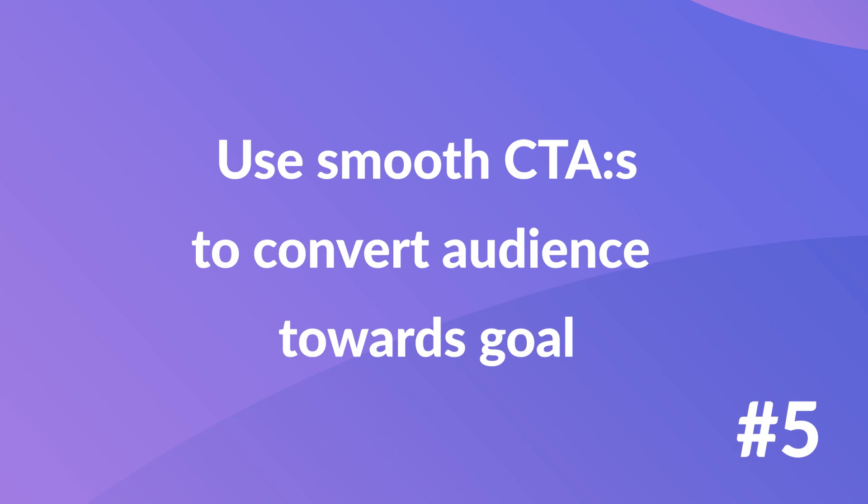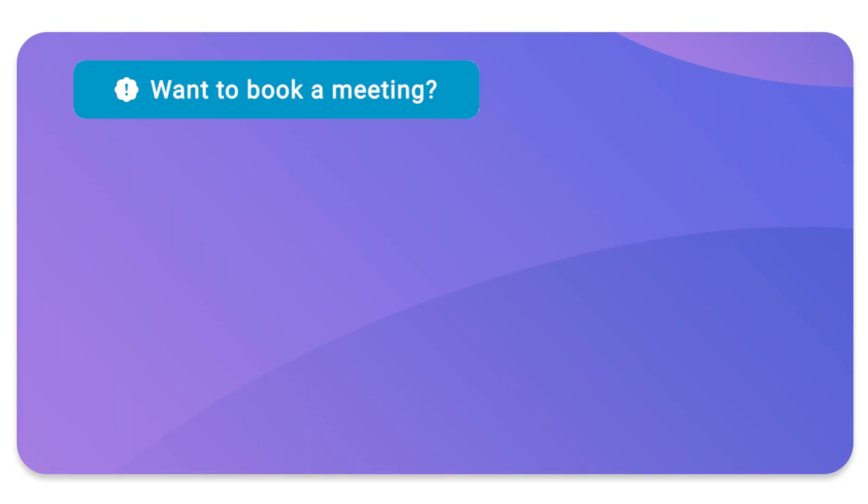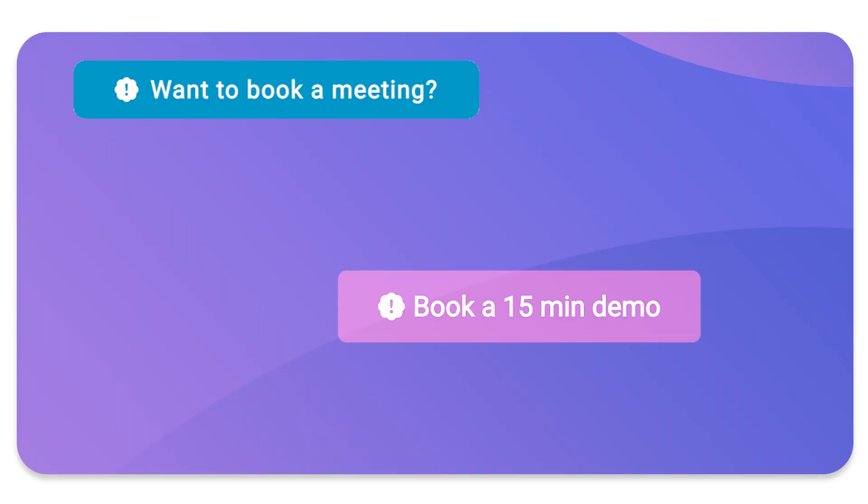Number five: use smooth call to actions to convert your audience towards your goal. Provide a clear instruction on exactly how and why to convert to the next step — let's say it's book a meeting, get a demo, or download an ebook. Make sure your call to actions are actionable and super specific.